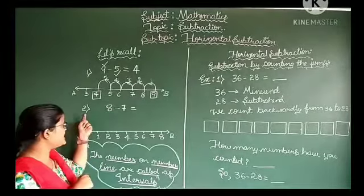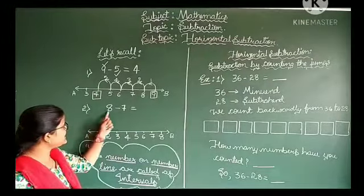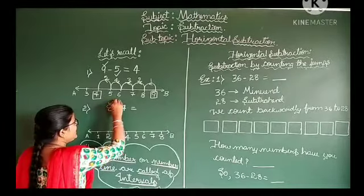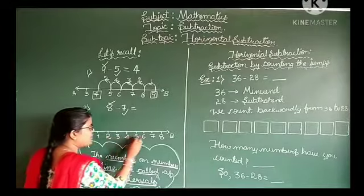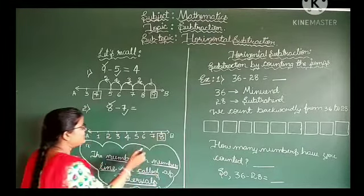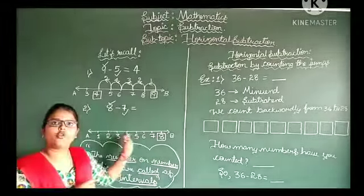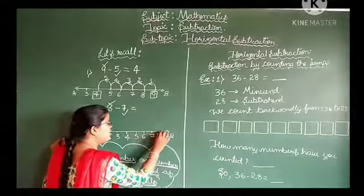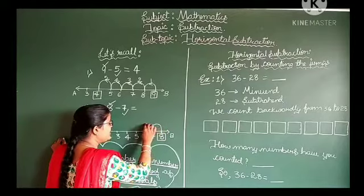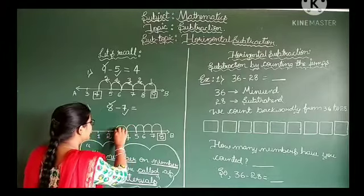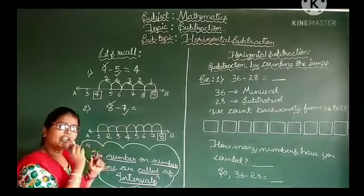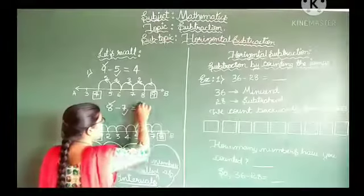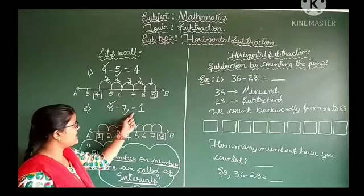Now, let's move to the second one: 8 minus 7. In these two numbers, 8 is the bigger number and 7 is the smaller number. Mark 8 on the number line — here is 8. Then move backwardly, to the left, 7 steps: 1, 2, 3, 4, 5, 6, 7. We reach one number. That number is the difference. We reach the number 1. Therefore, 8 minus 7 is equal to 1.